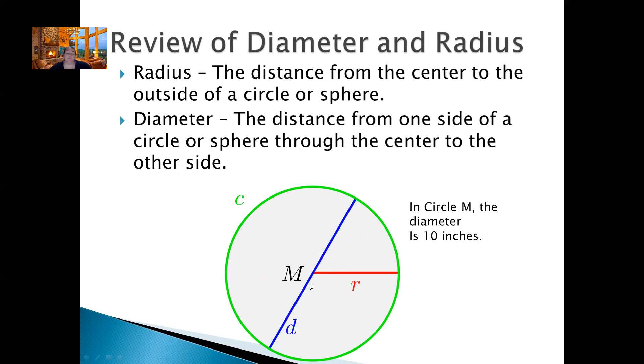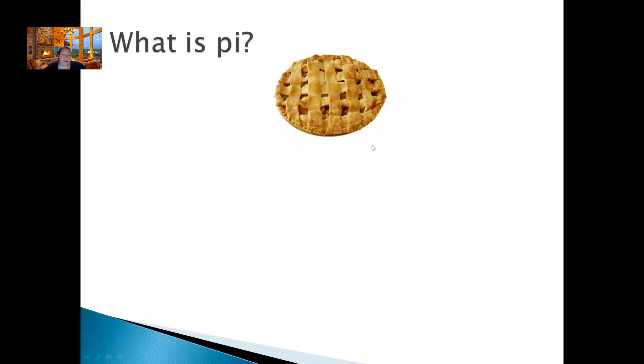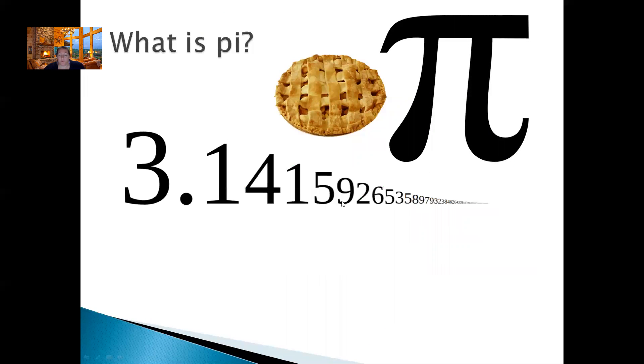Think about it — that goes from the edge to the center, edge to the center, so it's just two radiuses. If you're doing a problem and it says the diameter is 10 inches, for the formulas we're going to be using you need to find the radius, so you just divide by 2 to get 5. Or if they tell you the radius is 7, the diameter is going to be times 2, which is 14. Some problems are going to try to trick you — make sure you use the radius in these formulas. Does anybody know what pi is? You should have used it finding the area and the circumference of a circle.